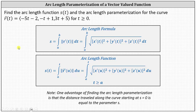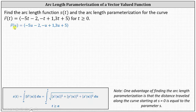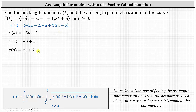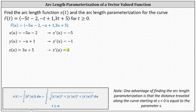To get started, we'll write R of t as R of u, where the x component is x of u equals negative 5u minus 2, the y component is y of u equals negative u plus 1, and the z component is z of u equals 3u plus 5. Next, let's determine the derivatives: x prime of u equals negative 5, y prime of u equals negative 1, and z prime of u equals 3.